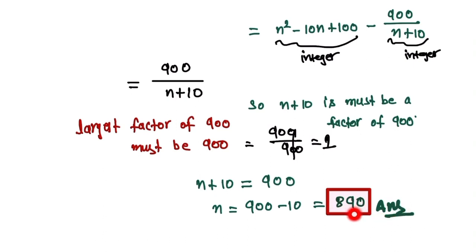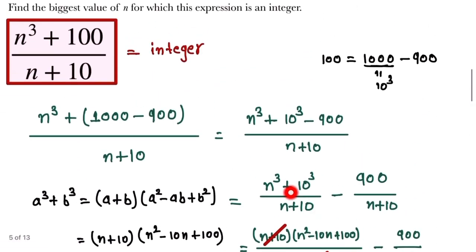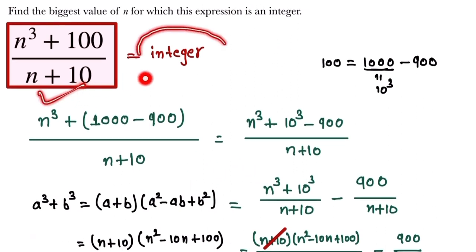When we put n equals 890 in this expression, it gives a perfect integer. Thank you so much for watching my video. If you like the video then subscribe to our channel and share it with your friends.